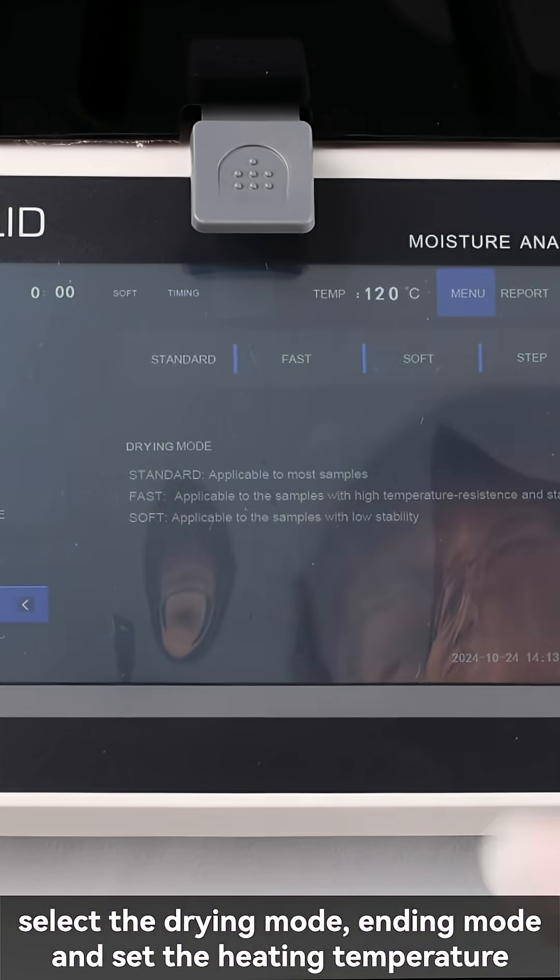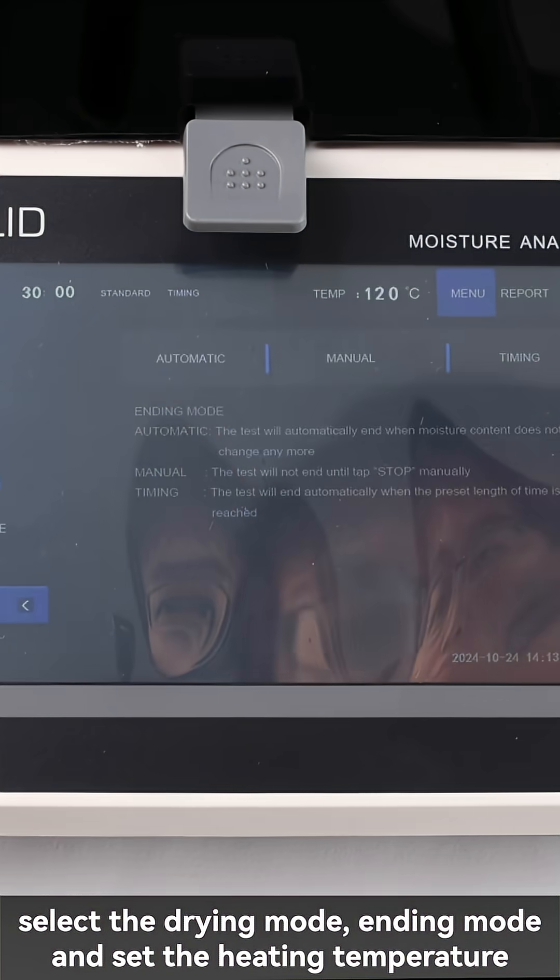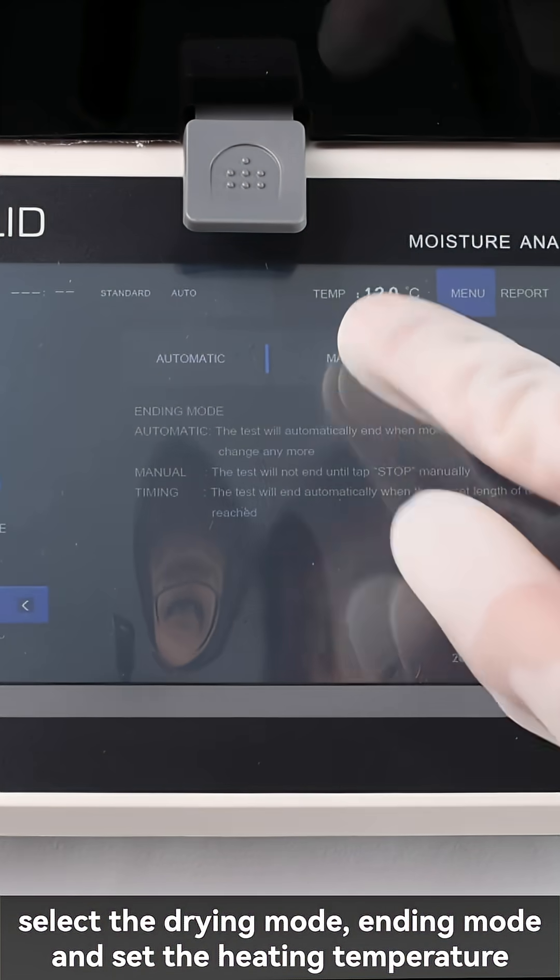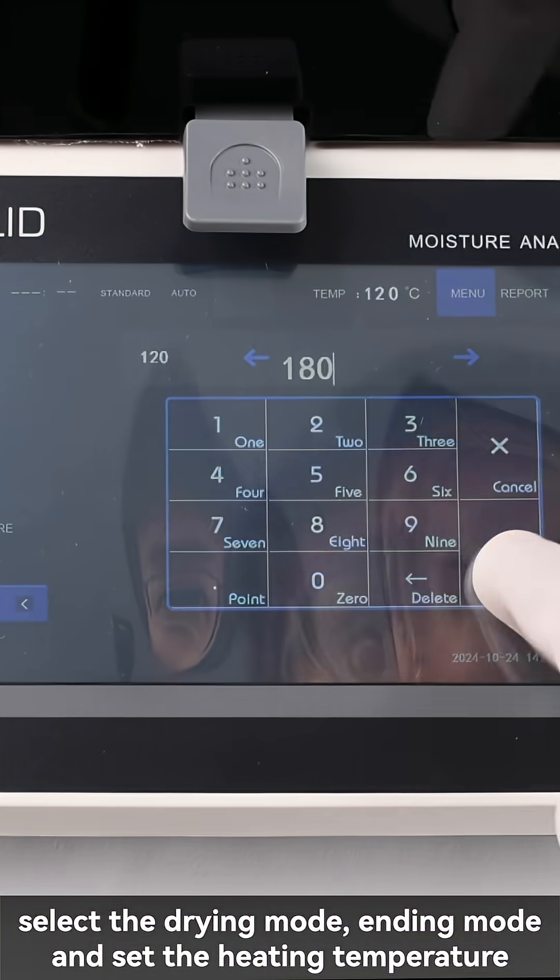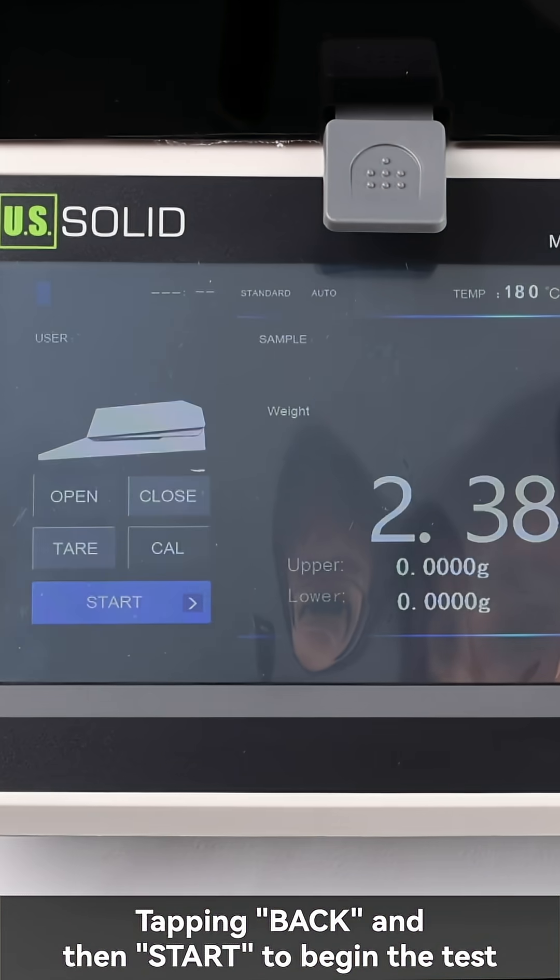Select the drying mode, ending mode, and set the heating temperature. Tap back and then start to begin the test.